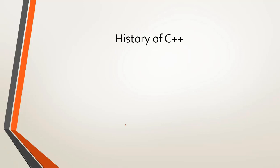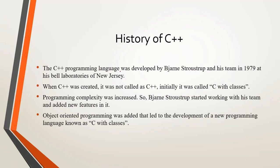The next topic is the history of C++. C++ was developed by Bjarne Stroustrup and his team in 1979 at Bell Laboratories of New Jersey. When C++ was created, it was not initially called C++; it was called C with classes. The reason for its development was that as computational tasks increased year by year, the programming complexity also increased, so Stroustrup started working with his team and added new features to C.